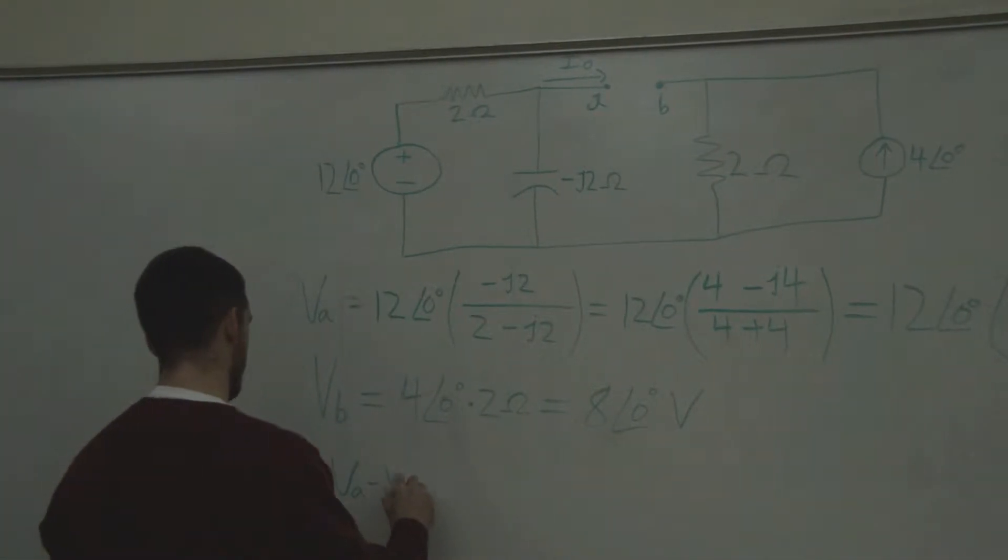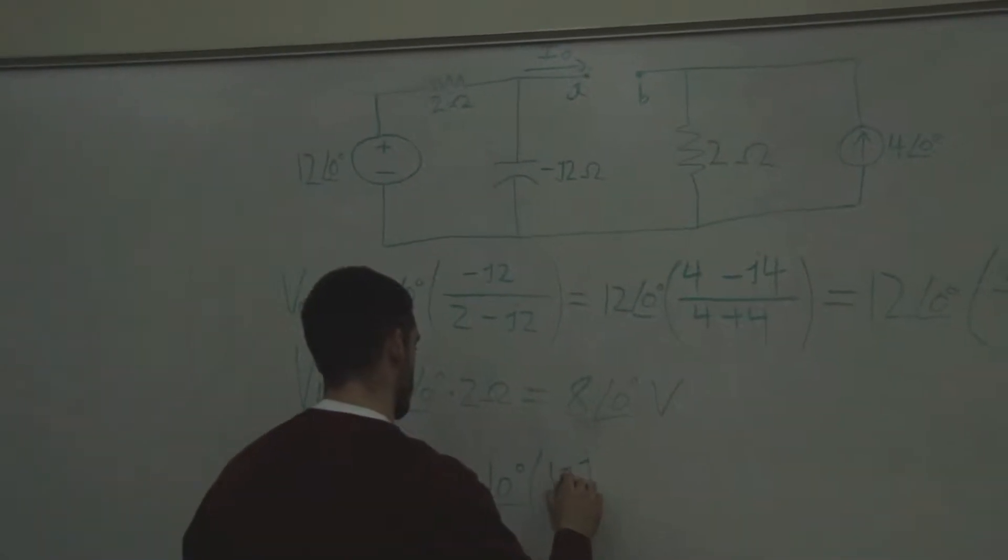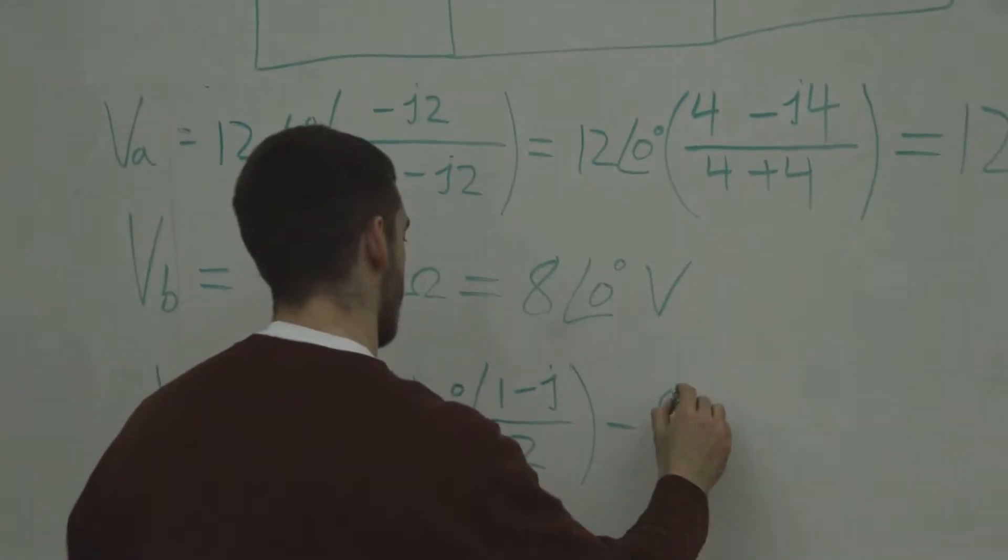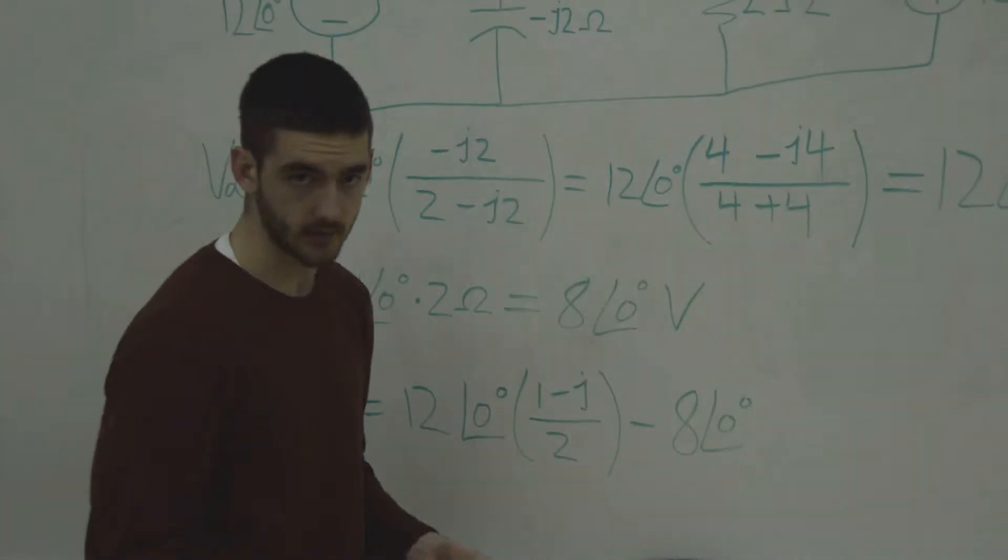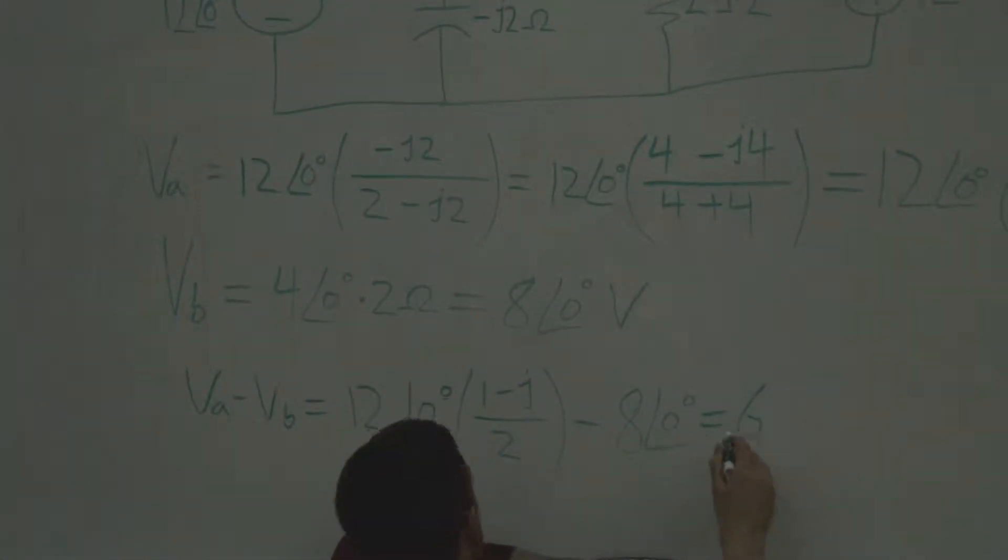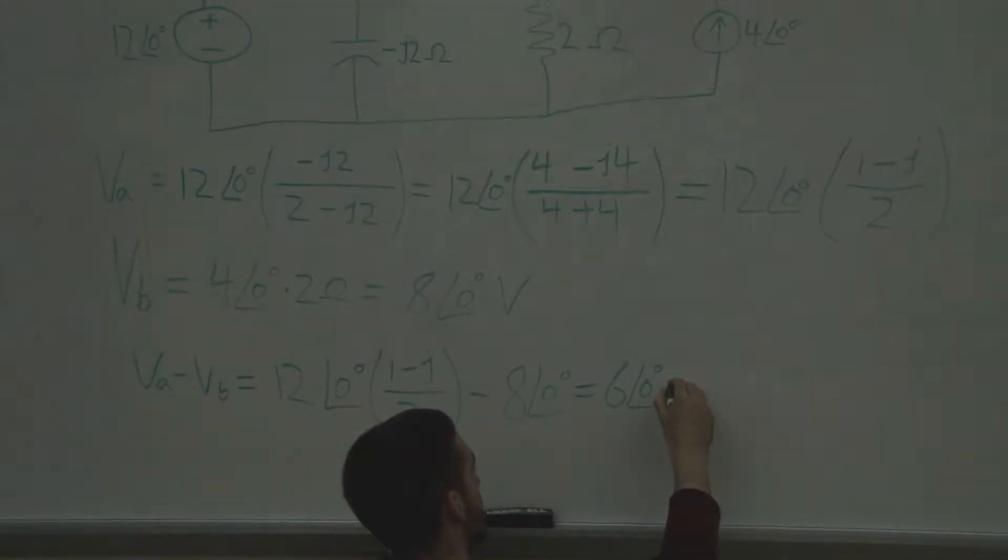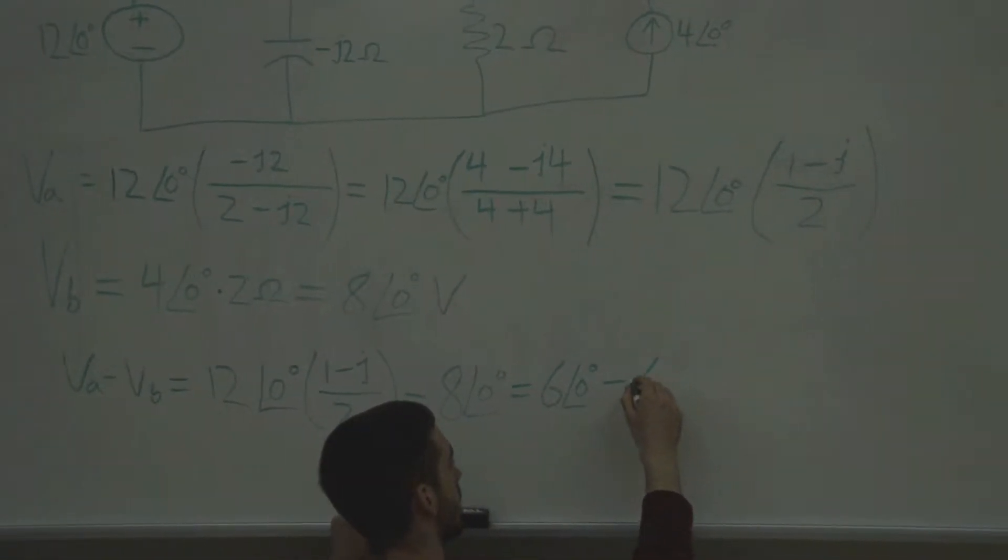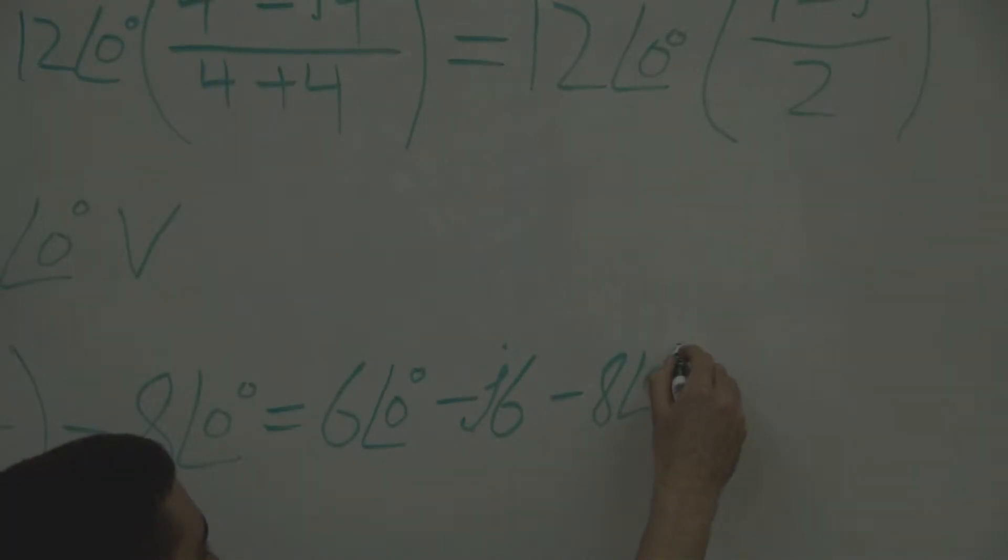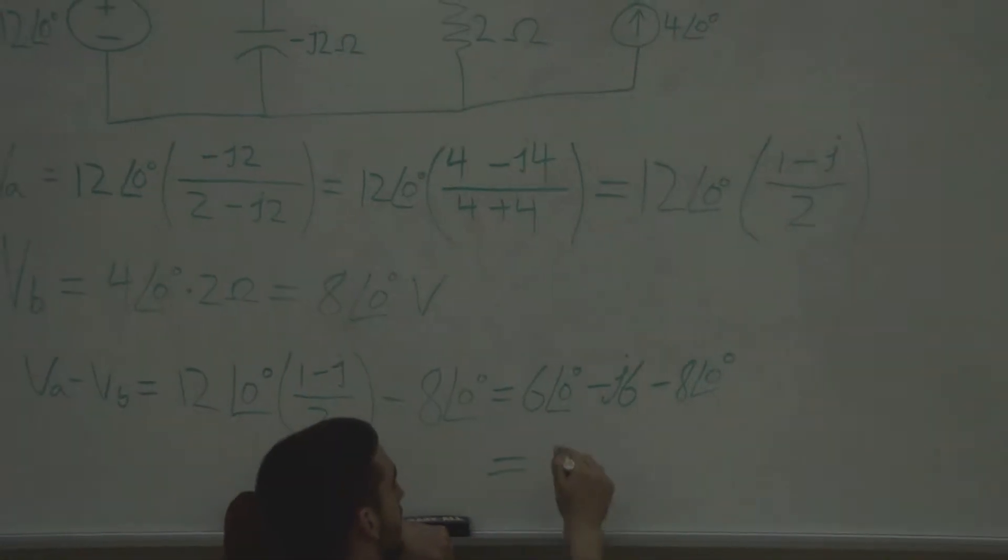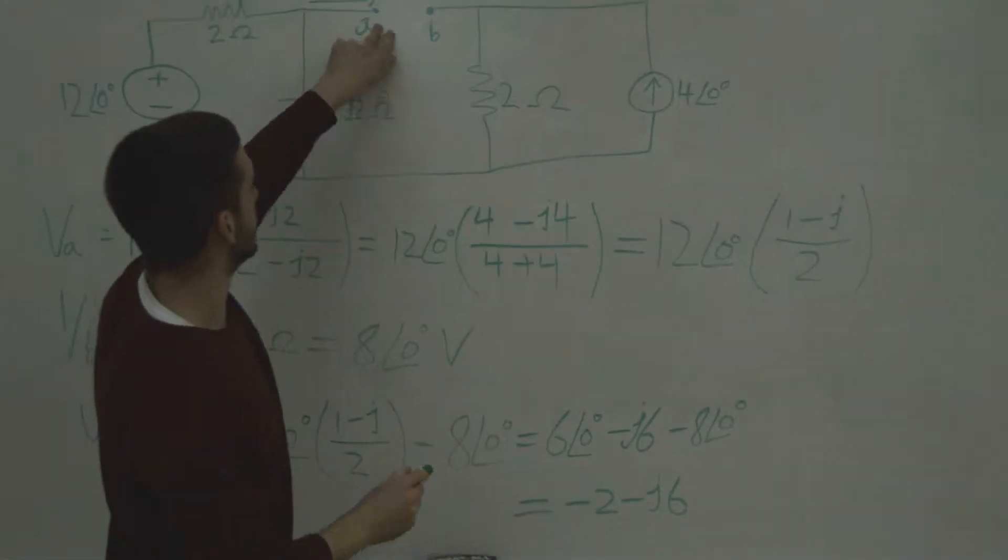So VA minus VB equals 12 with a phase shift of zero times 1 minus J over 2 minus 8 with a phase shift of zero. And we can simplify this, so if we distribute this one half outside, we'll have 6 out here. So this equals 6 with a phase shift of zero, and we'll also distribute it amongst the 1 and the negative J. So we'll have 6 with a phase shift of zero, minus 6J, and then we're subtracting 8. So this equals 6 minus 8 is negative 2, and then minus J6. And that is our open circuit voltage right here.